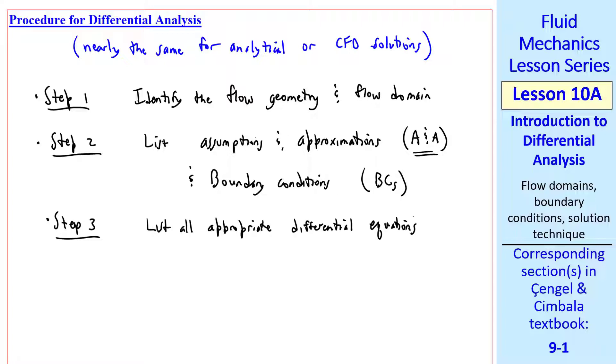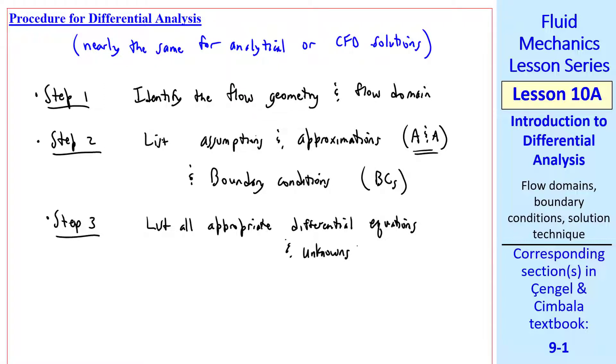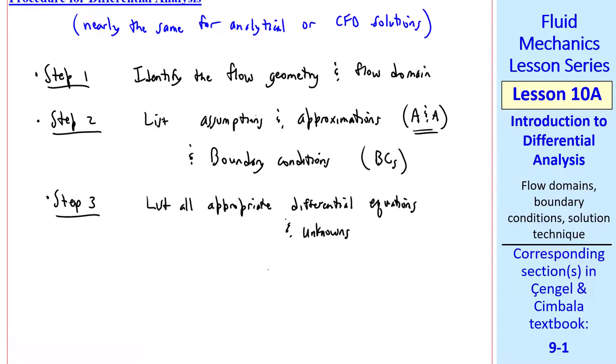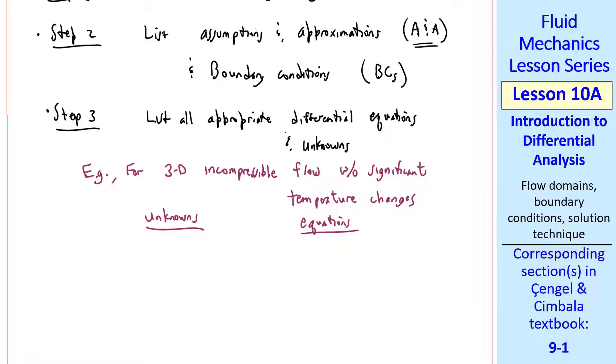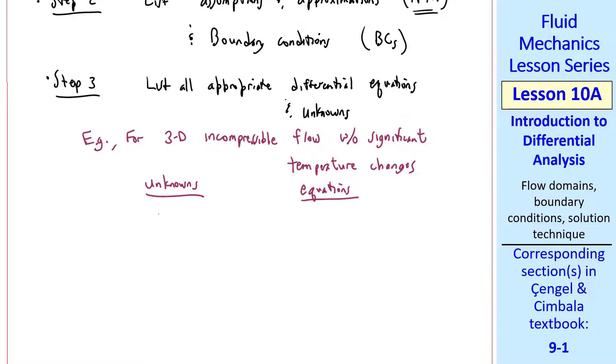To generate a solution, you must have the same number of equations as unknowns. For example, for 3D incompressible flow without significant temperature changes, we can list the unknowns and the equations. In Cartesian coordinates, the unknowns are U, V, and W, the velocity components, and the pressure. The equations are conservation of mass and the linear momentum equation. We add these up, there's 4 unknowns,